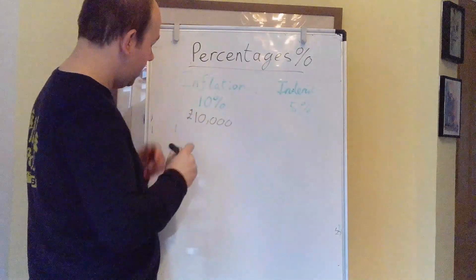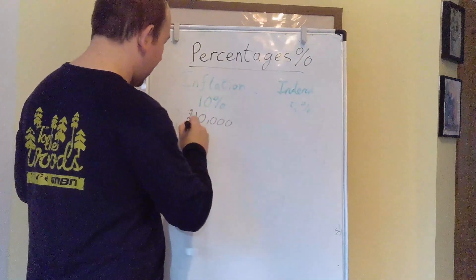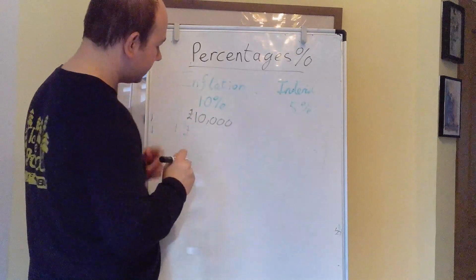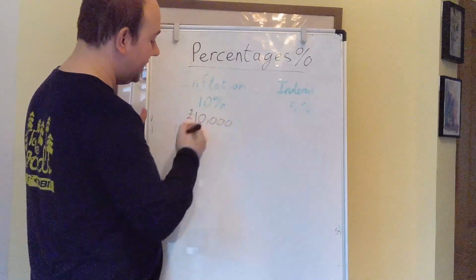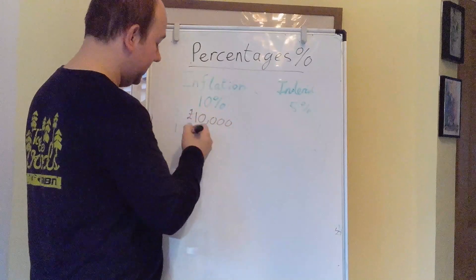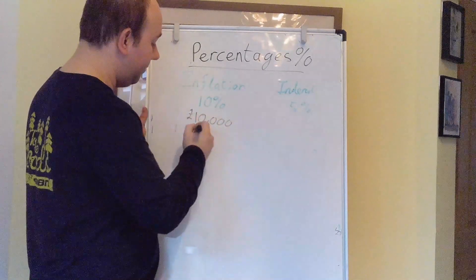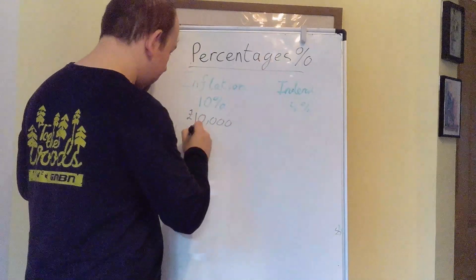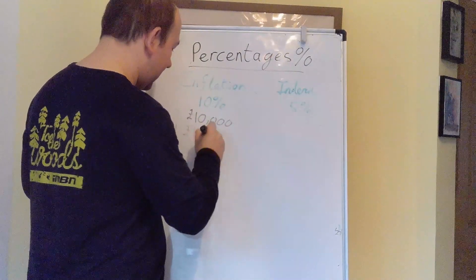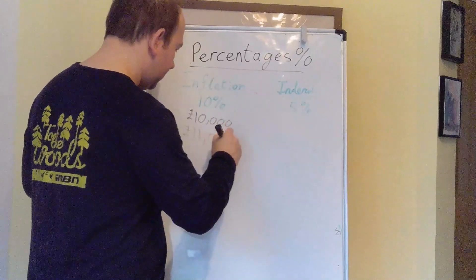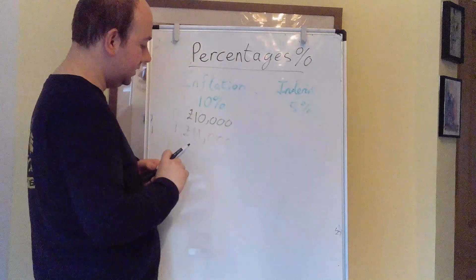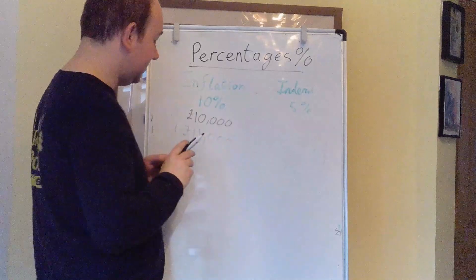This is year zero. After one year, we are going to have 10% more in the pot, or you need 10% more. So it's going to go up by £1,000. So after one year, you're going to need £11,000 to buy your 10,000 Mars bars.